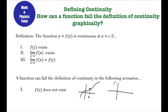Another graph in which f of c does not exist is if you have a vertical asymptote somewhere. Say you have a function shooting down over here with a vertical asymptote shooting up over here, and if this is your c value, then there's no f of c value — c is undefined at that point. So there are two types of discontinuities that can happen when f of c does not exist: a removable discontinuity (a hole) or a vertical asymptote.